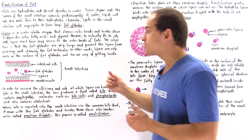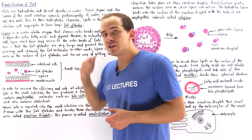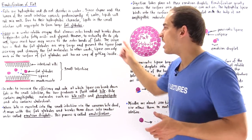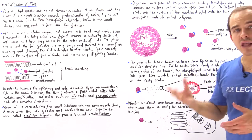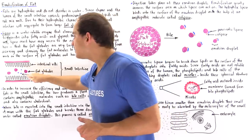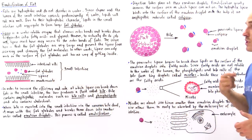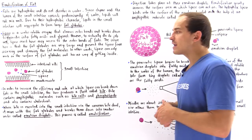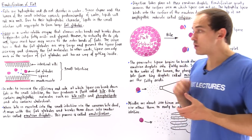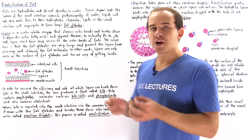This means lipase cannot cleave the majority of the ester bonds that hold the triglycerides and lipids together. The pancreatic lipase can only cleave the bonds of lipids found on the surface of the fat globules and has no way of getting inside them. This makes the efficiency and rate at which lipase cleaves bonds very, very low.